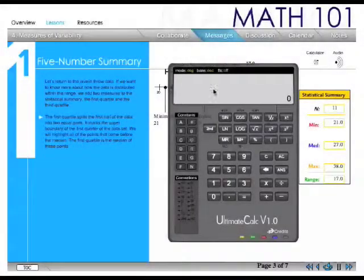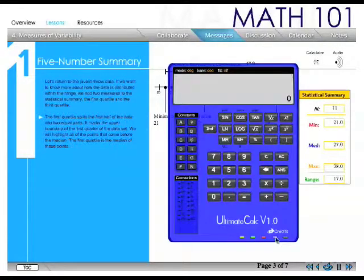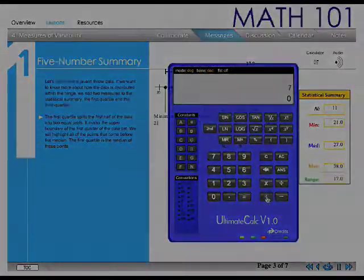The first quartile splits the first half of the data into two equal parts. It marks the upper boundary of the first quarter of the data set. We will highlight all of the points that come before it.